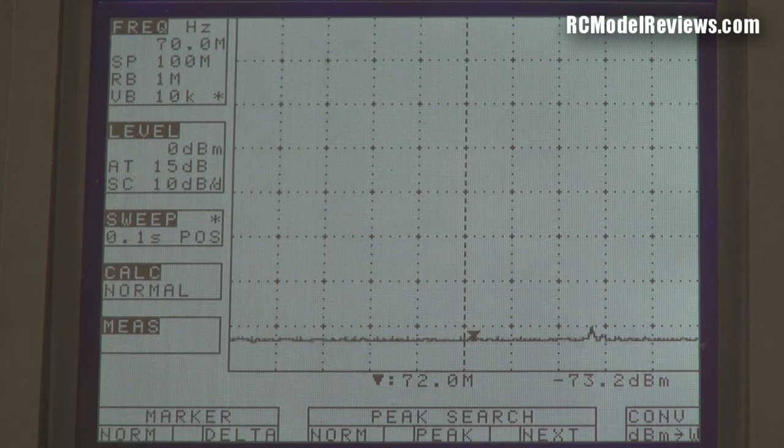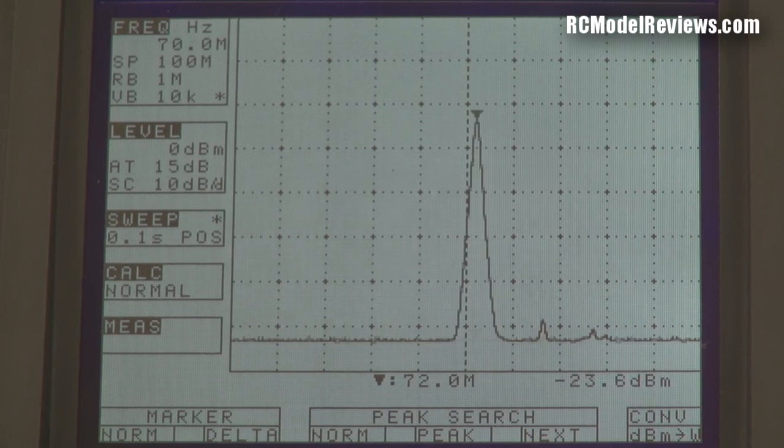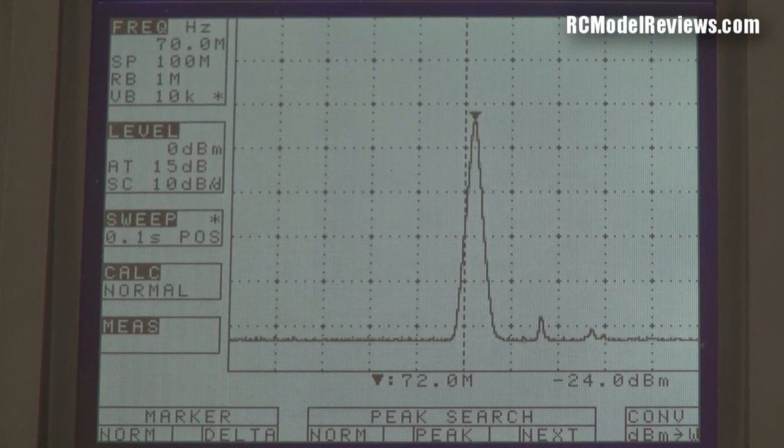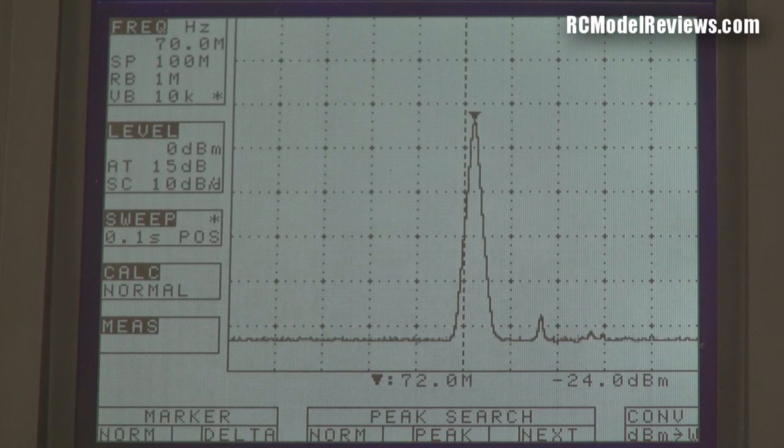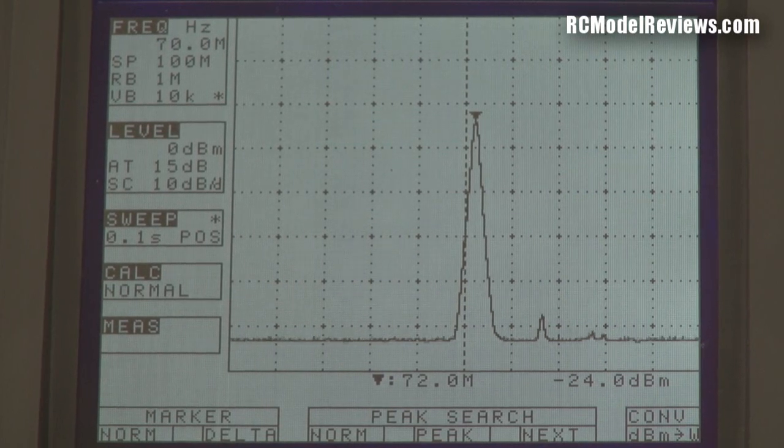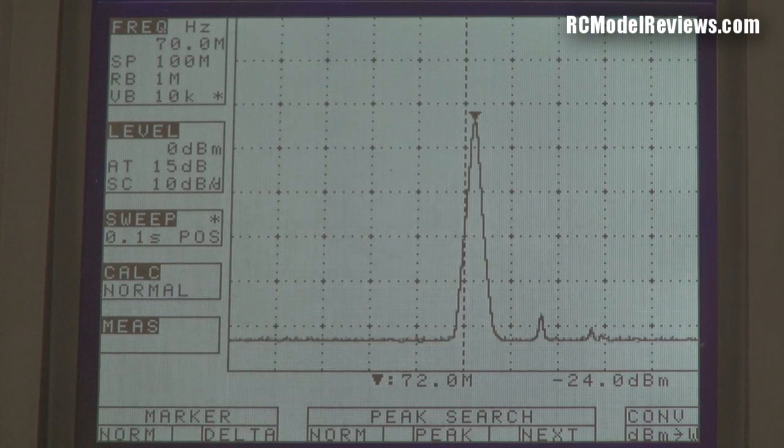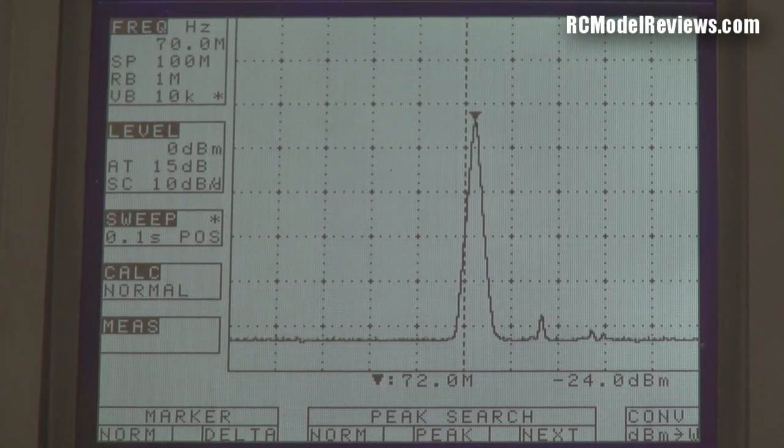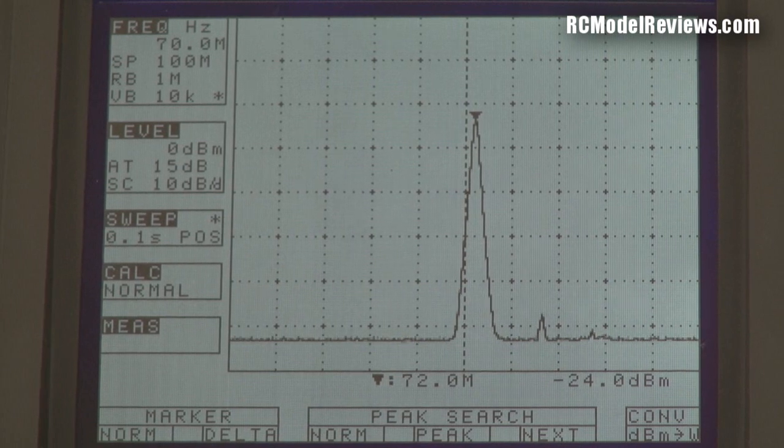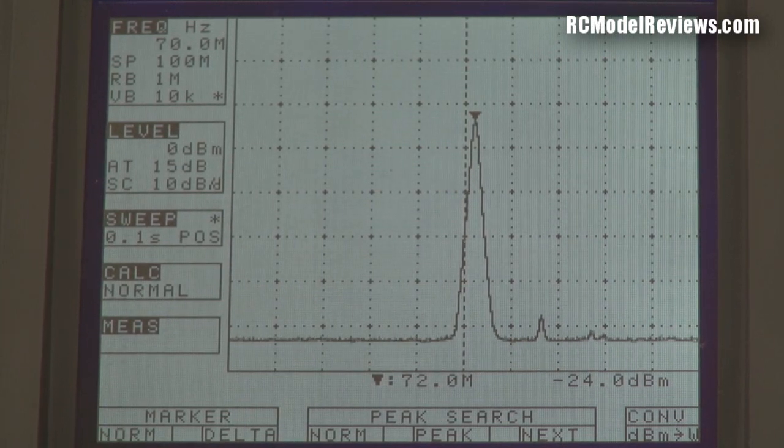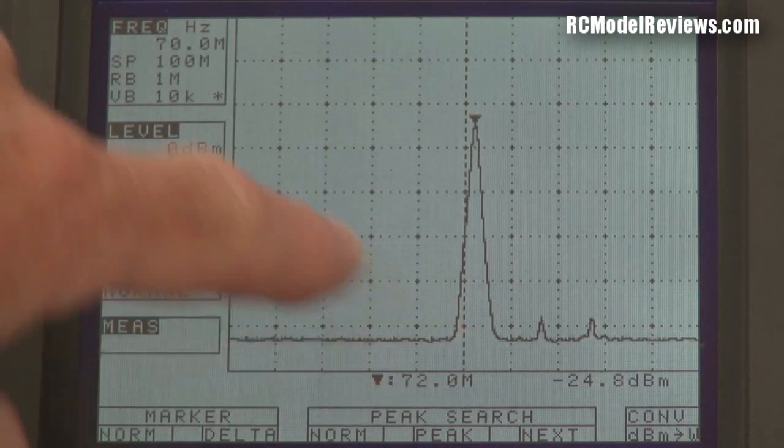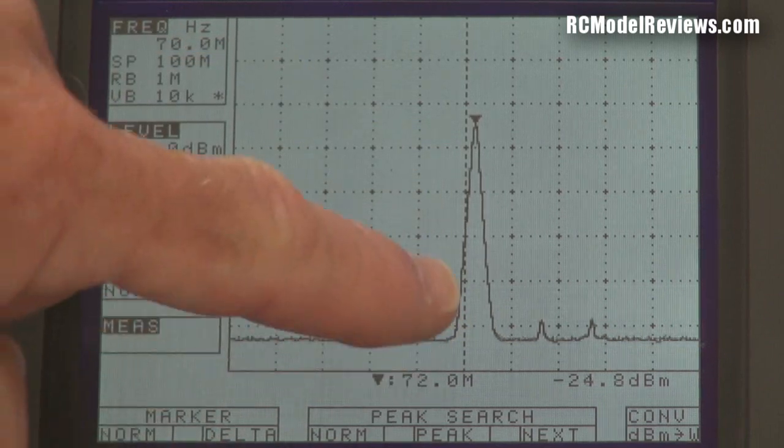We've got a little bit of noise here—that may be FM radio stations, I'm not sure. I'm going to turn on the transmitter now. This is a 72 megahertz transmitter. Watch what happens. Look at that! That's your good old-fashioned FM 72 megahertz radio transmitter. It's just a bit of a spike. I could make that spike wider if I wanted to by zooming in, but there we go, that's a typical old-fashioned 72 megahertz transmission.